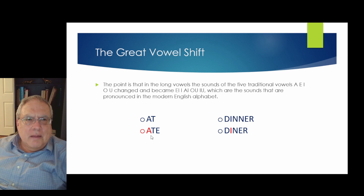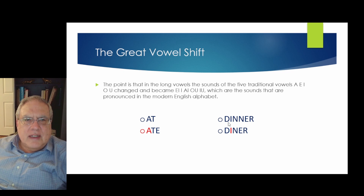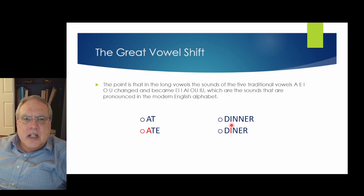There is an old rule in Latin that says when there are two vowels in a word divided by one consonant, the first vowel is long and the second is short. In the word 'dinner' (D-I-N-N-E-R), two consonants separate the vowels, so both become short and it is pronounced 'dinner,' just like in old Latin.